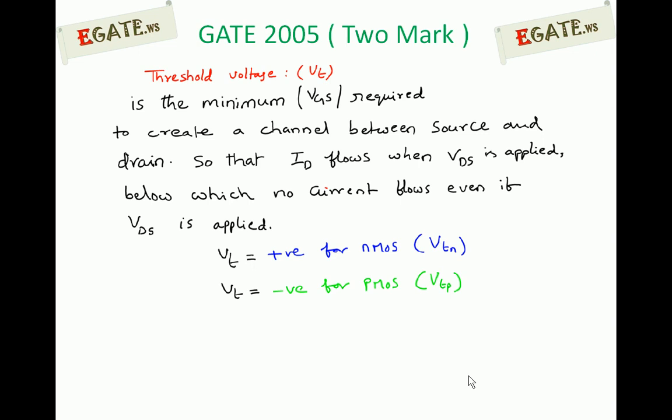Threshold voltage is the minimum gate-to-source voltage required to create a channel between source and drain, so that drain current flows whenever drain-to-source voltage is applied. Below this threshold, no current flows even if VDS is applied.